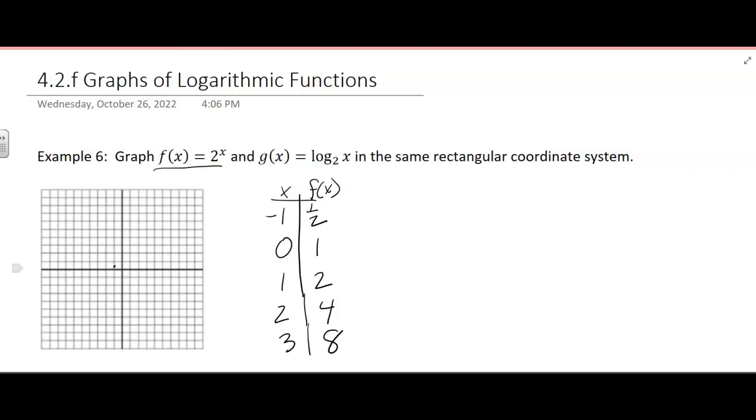And then we could graph those points. And we get an exponential curve going something like that. And we have that asymptote at the x-axis. Okay, well, this g of x, I'm sorry, this is f of x.